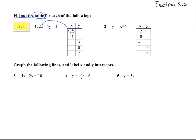So we're going to fill out this table. This x is going to go right into that number there, and we're going to have 2 times 5 is 10 minus 5y equals 11. Subtract 10, we get negative 5y equals 1, and divide by negative 5, and we get y equals negative 1/5.